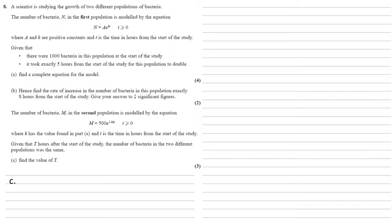The number of bacteria m in the second population is modeled by the equation m equals 500 e to the 1.4 kt, again for t larger than or equal to zero, where k has a value found in part a, and t is the time in hours from the start of the study. Given that t hours after the start of the study, the number of bacteria in the two different populations was the same, we need to find the value of t.